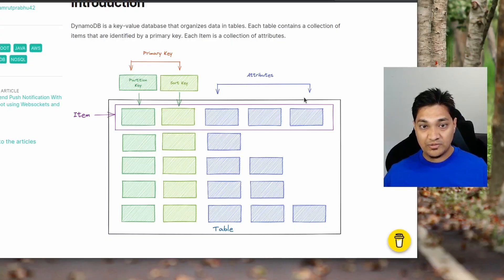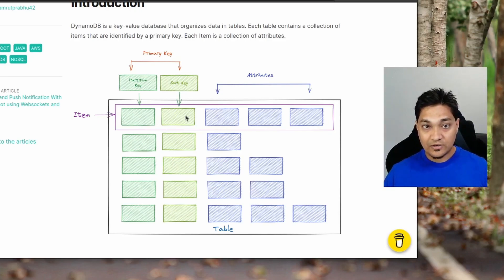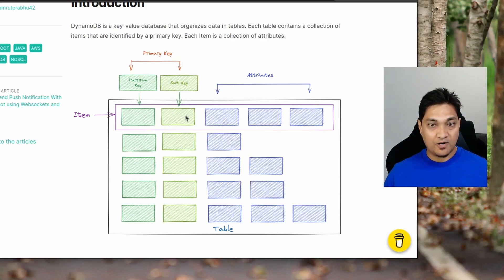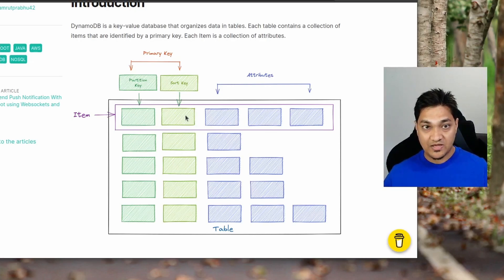Before we create the application, let's look at what DynamoDB is and how data is stored. A DynamoDB consists of a table which has a collection of items. An item contains a collection of attributes. There are a few attributes you can specify as certain keys, such as partition key and sort keys. A partition key defines where a particular item would be stored — in which particular partition.